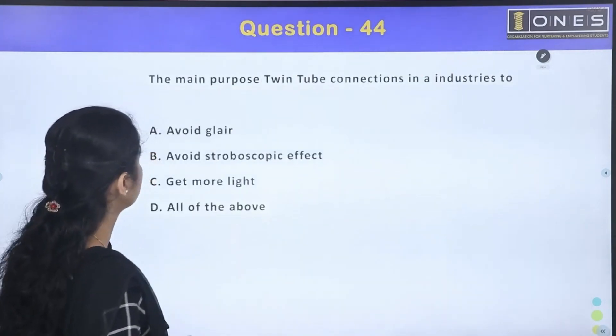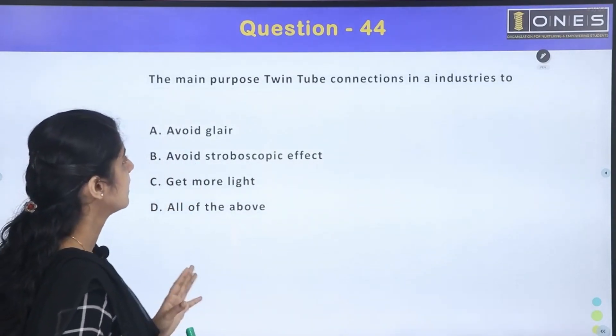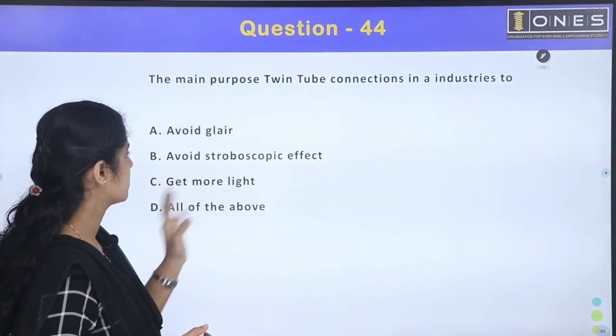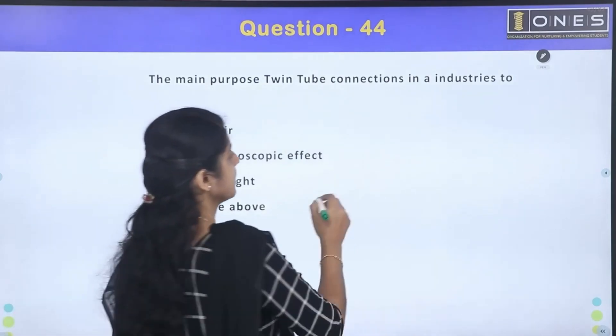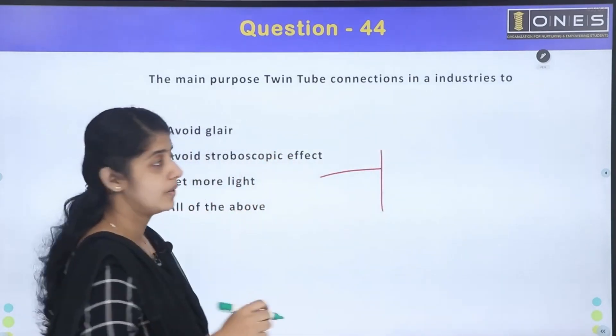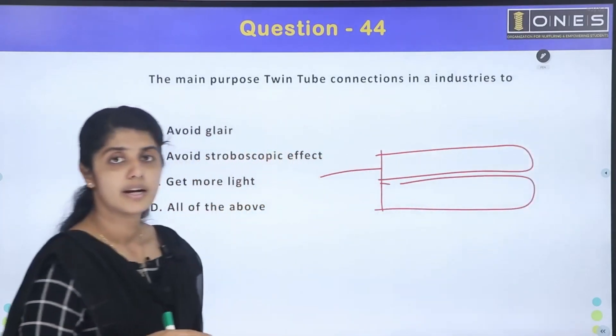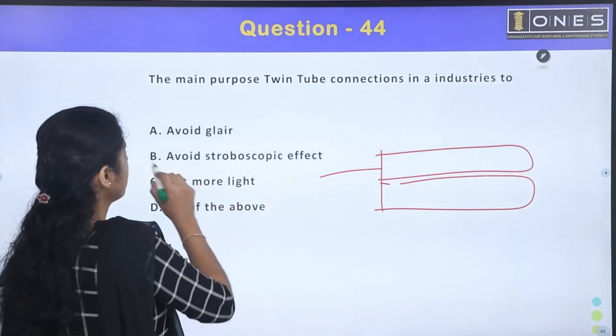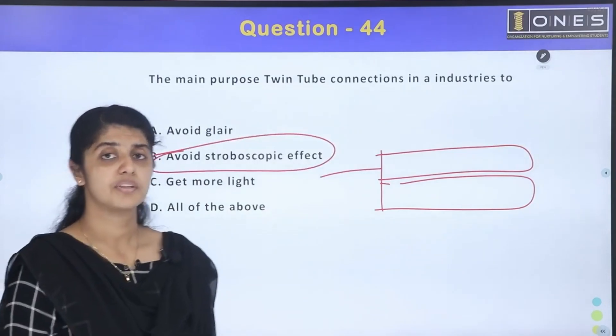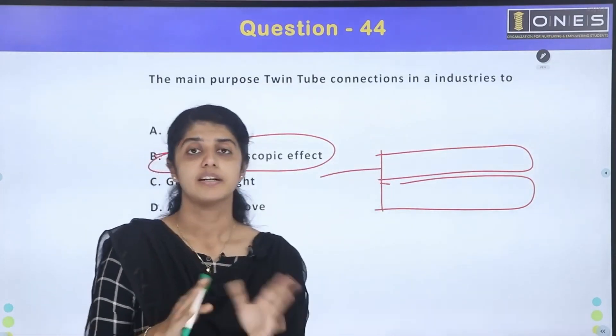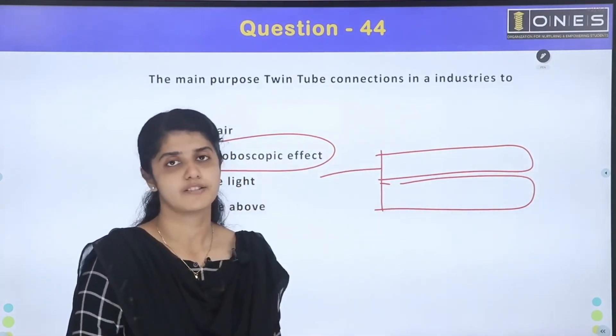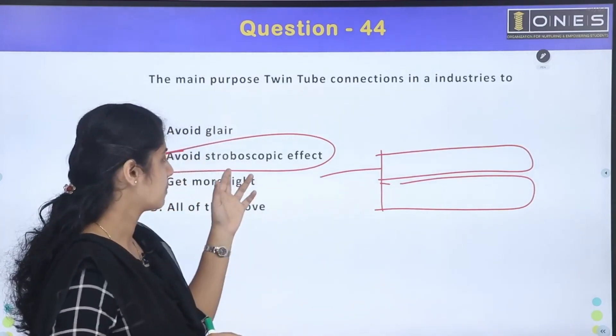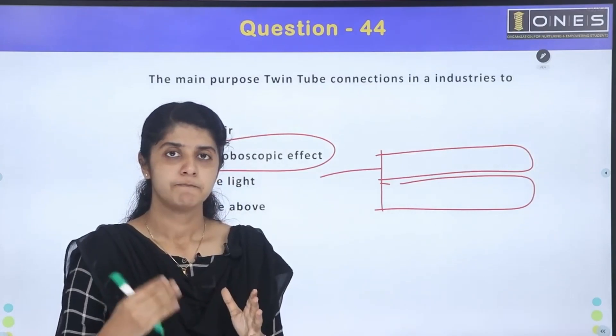The main purpose of twin-tube connections in industries. In industries, twin-tube connections: Avoid blayer, stroboscopic effect, get more light, all of them. What are you asking about? If you have any questions about industrial applications. There is no one tube - if you add two tubes, you can add connections. You can add connections to two tubes. What is the reason? It is for avoiding stroboscopic effect. You can add a twin tube.